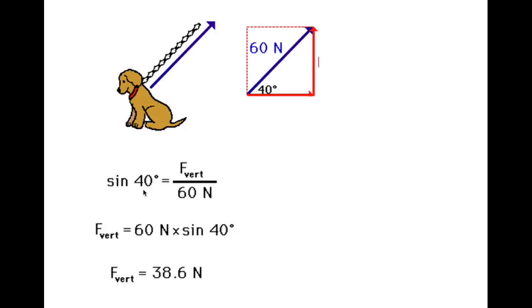So here I am given the sine of 40, and this is going to give me my force for my vertical, or my y axis right here, over 60 newtons. When you solve for it, you should get 38.6 newtons for the force of vertical, of the vertical vector.